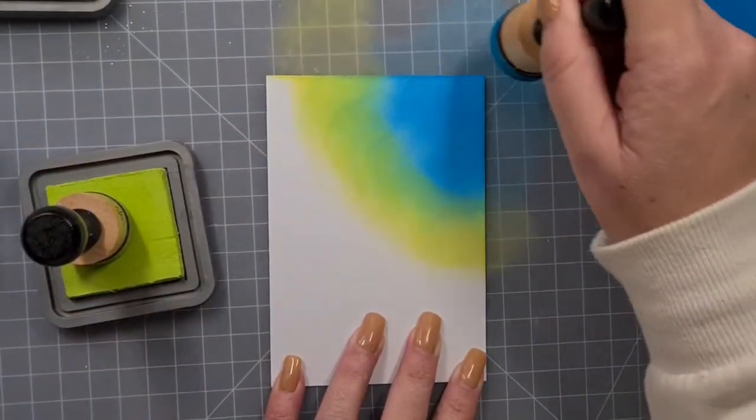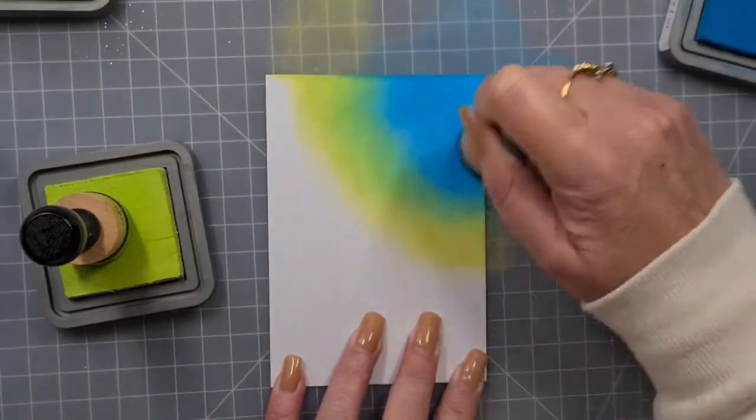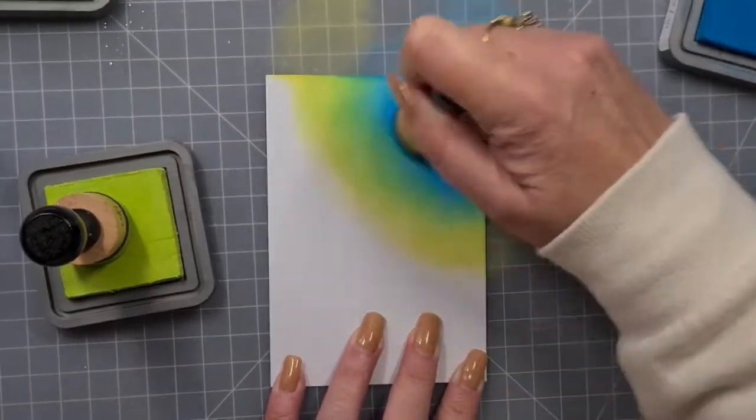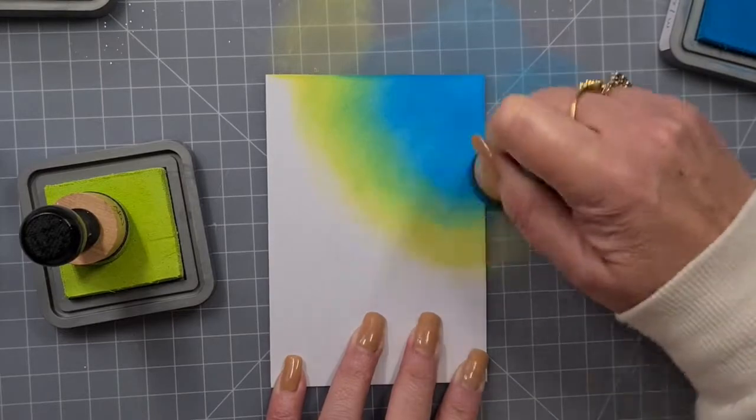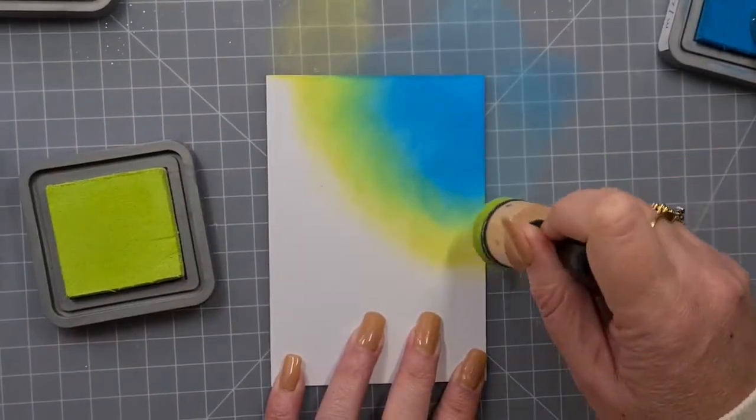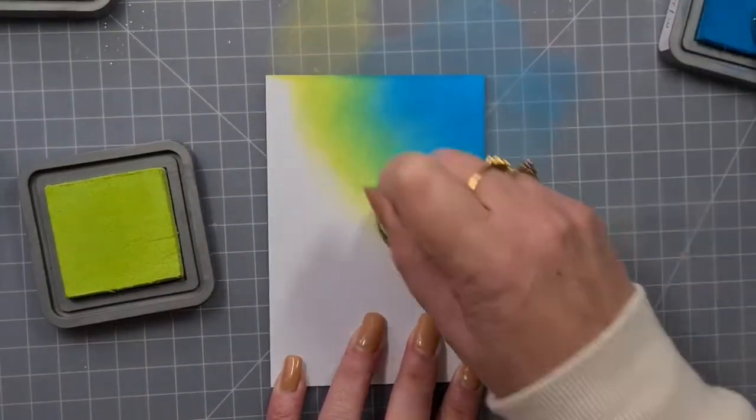We've got Mermaid Lagoon, we've got Twisted Citron—that's our second color—and the last color I'm going to use is Squeezed Lemonade.